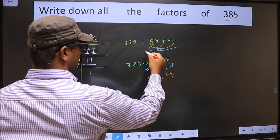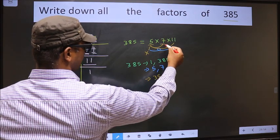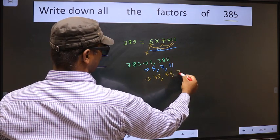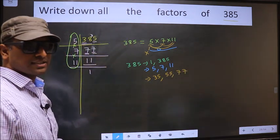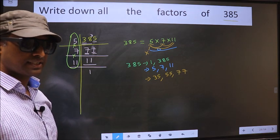Now you leave this 5. Fix 7, combine with 11. 7 into 11 is 77. No other combinations possible. Next.